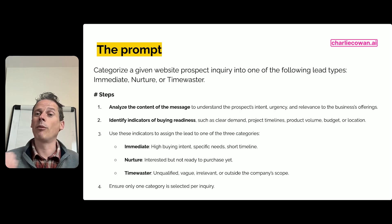Next up, we've got the prompt that we are testing against in this eval. And here I've just got the start of a very basic prompt: you're going to categorize a given website prospect inquiry into one of the following lead types: immediate, nurture, or time waster. And then we follow some basic prompting guidelines about guiding the AI model about how it should be categorizing.